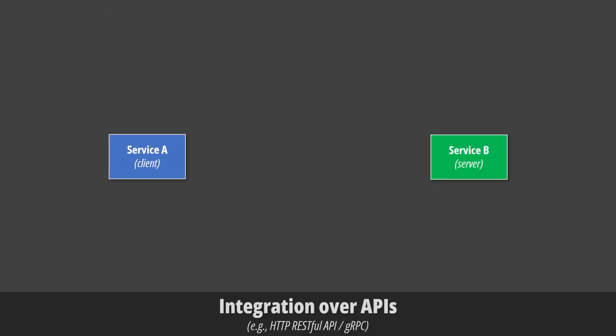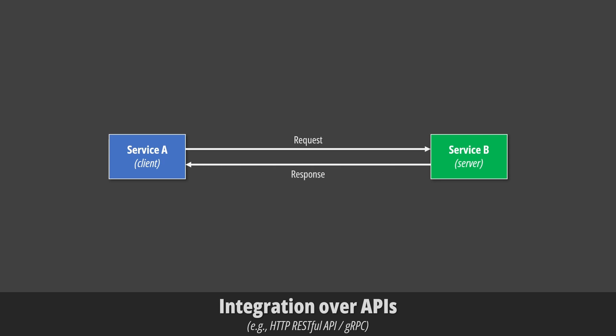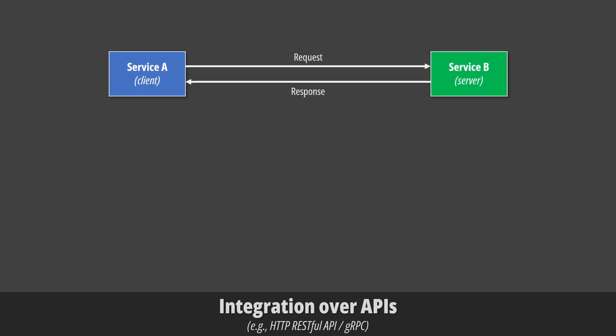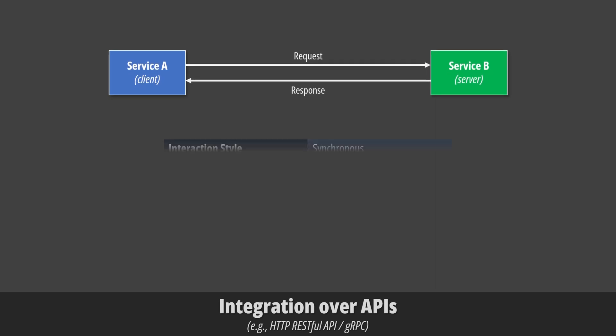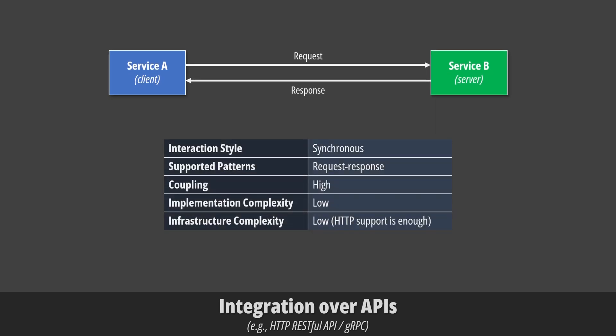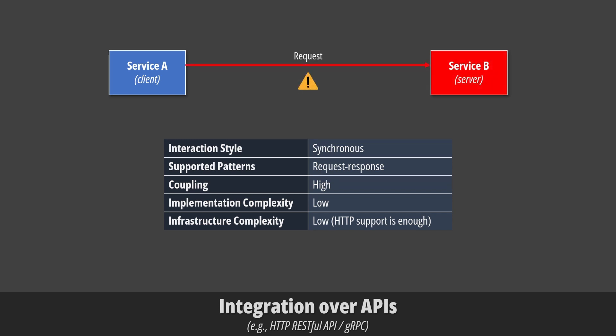When integrating services or applications with APIs, Service A, known as the client, performs a direct request to Service B, the server, which processes the request and returns immediately a response. This interaction style is known as request-response, and it's synchronous — it must happen all at the same time. If Service B is offline, the interaction fails, and Service A needs to retry it later.